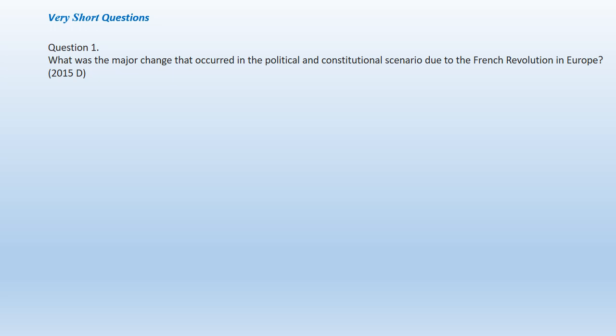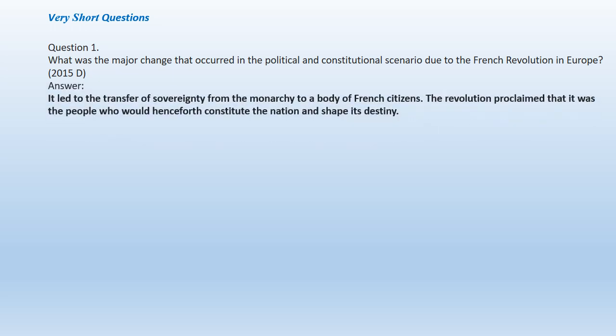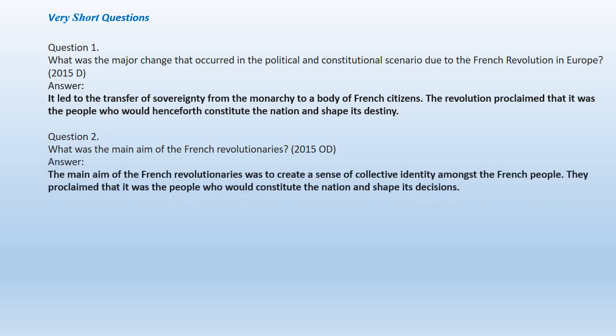Very short questions. Question 1: What was the major change that occurred in the political and constitutional scenario due to the French Revolution in Europe? It led to the transfer of sovereignty from the monarchy to a body of French citizens. The revolution proclaimed that it was the people who would henceforth constitute the nation and shape its destiny. Question 2: What was the main aim of French revolutionaries? The main aim of French revolutionaries was to create a sense of collective identity among the French people. They proclaimed that it was the people who would constitute the nation and shape its decisions.